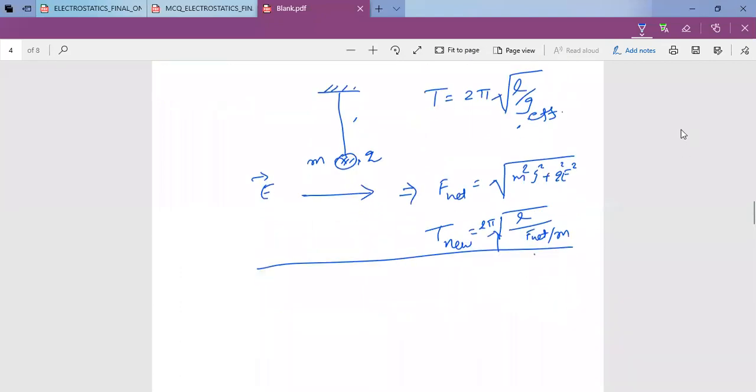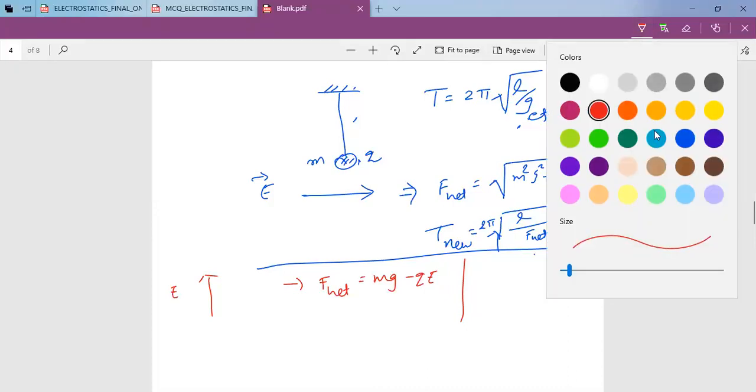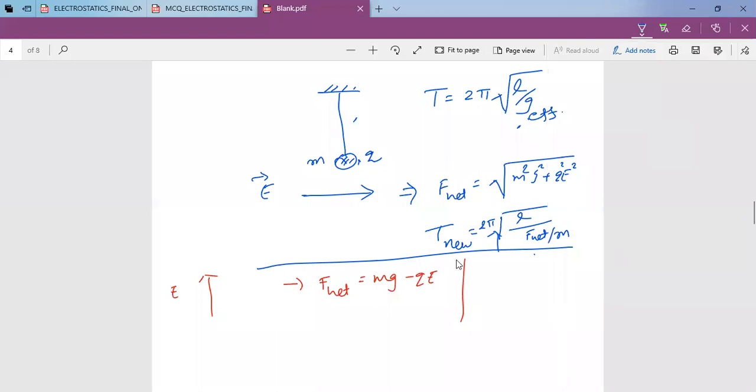Now suppose instead of a horizontal electric field, we have a vertical electric field. Then net force will be mg minus qE. If we have a downward electric field, then net force will be mg plus qE.